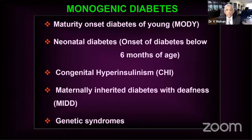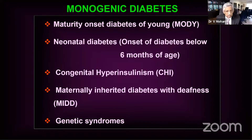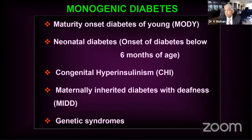Dr. Sandeep Julka has already talked about MODY — maturity onset diabetes of the young. Monogenic neonatal diabetes also comes under that. There is congenital hyperinsulinism, which is the opposite of diabetes. There is MIDD, which was already discussed. There are genetic syndromes — Dr. Bupin Sethi talked about lipodystrophic diabetes, Wolcott-Rallison syndrome, Didmoad syndrome, Wolfram syndrome — all those come under genetic syndromes.